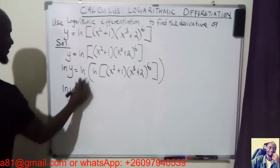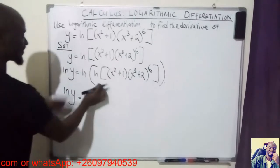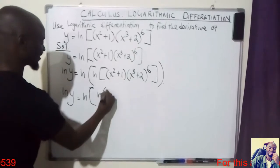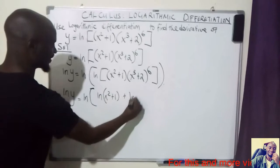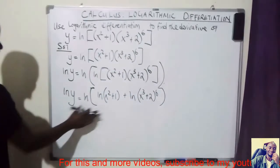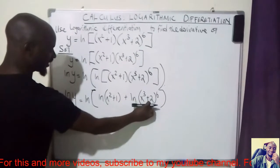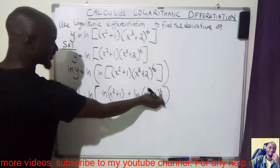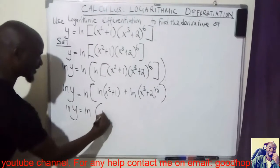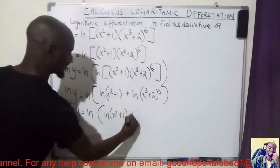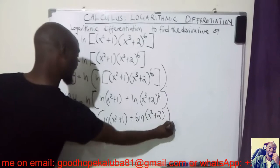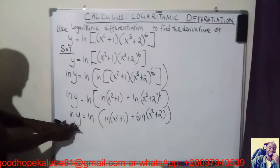I'm going to use the laws of logarithms to simplify. ln of y is equal to ln of (x² + 1) times (x³ + 2)^6. Since ln(a × b) = ln(a) + ln(b), I get ln(x² + 1) plus ln(x³ + 2)^6. Using the power rule of logarithms, ln(a^n) = n·ln(a), this becomes ln(x² + 1) + 6·ln(x³ + 2).